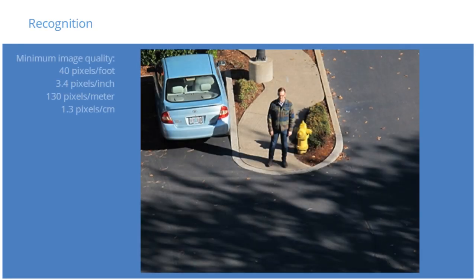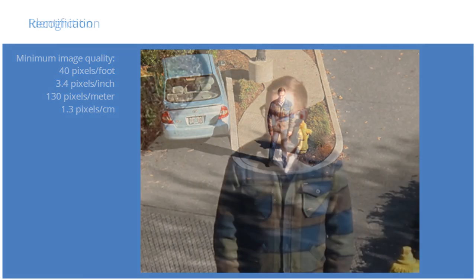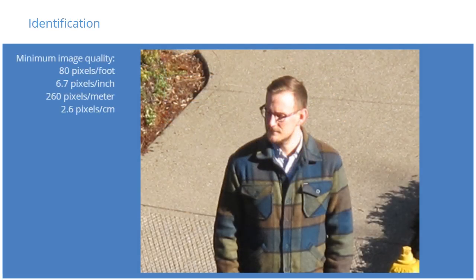A recognition objective provides an image in which a person is identifiable by someone familiar with that person, but not necessarily by someone unfamiliar with that individual. Personal details like glasses, jewelry, and tattoos are usually identifiable.